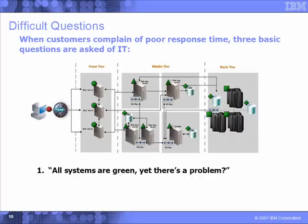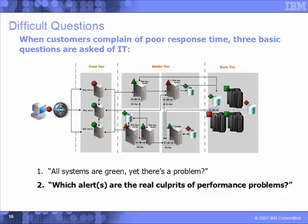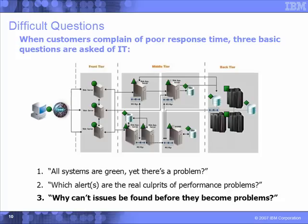Here are some typical questions that are asked of IT. A client complains of poor response time, and you ask IT what's going on. Well, they say all systems are green, we're all up and running, but we know there's a problem. Where do we begin to look? Another typical scenario is we know there's a slowdown in response time and we have many different alerts — which one is actually the root cause of the problem? And finally, but most importantly, why can't these issues be found before they become problems? We want to indicate warning states so that we can identify the problem and resolve it quickly before the client experiences the problem.